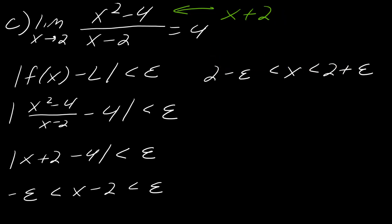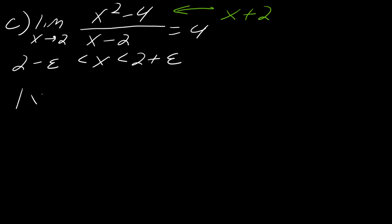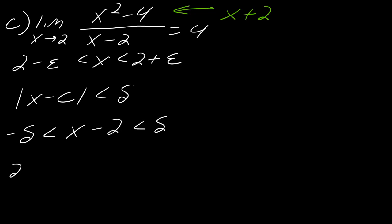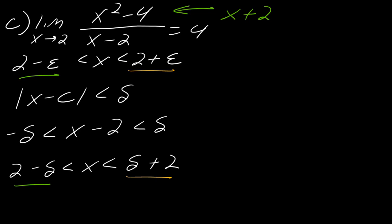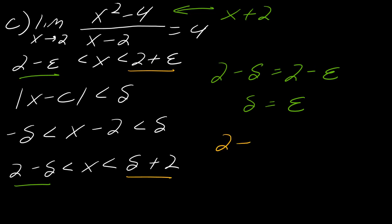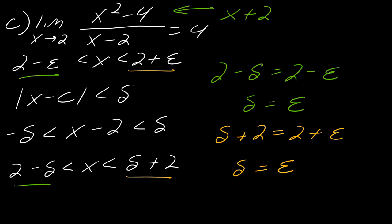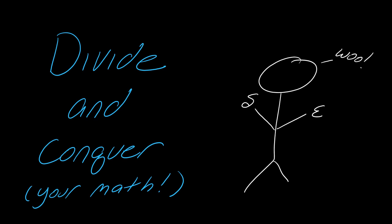Using this part of the definition, I can find my delta. With x minus c less than delta and c equals 2, I get: negative delta is less than x minus 2, which is less than delta, so 2 minus delta is less than x, which is less than delta plus 2. Setting these equal: 2 minus delta equals 2 minus epsilon, so delta equals epsilon. The same holds on the other side: delta plus 2 equals 2 plus epsilon, so delta equals epsilon. Sometimes they'll be equal, sometimes they won't — if they're not equal, choose the minimum one. Hopefully this video was helpful. If you have any questions or comments, feel free to leave me a comment, and I'll see you guys next time.